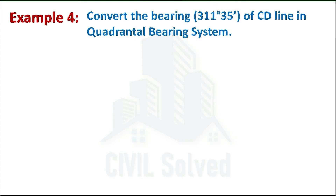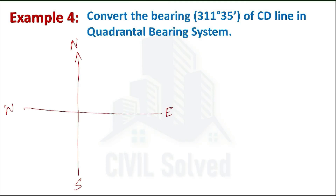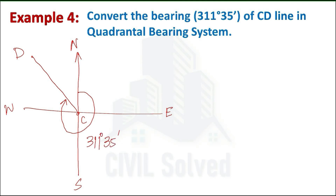In example number four, the bearing of line CD is given in the whole circle bearing system and we need to convert it into the quadrantal bearing system. Drawing the sketch: 311 degrees 35 minutes lies in the northwest region. The angle from north to the line measured clockwise is 311 degrees 35 minutes. Since the line is near north, the angle in QB will be measured from north.